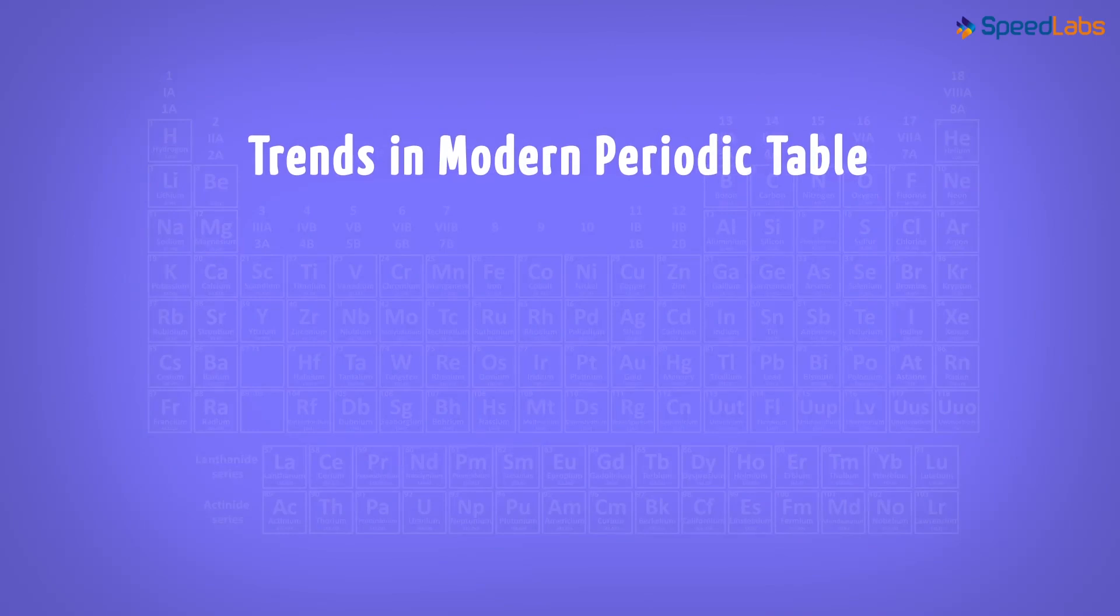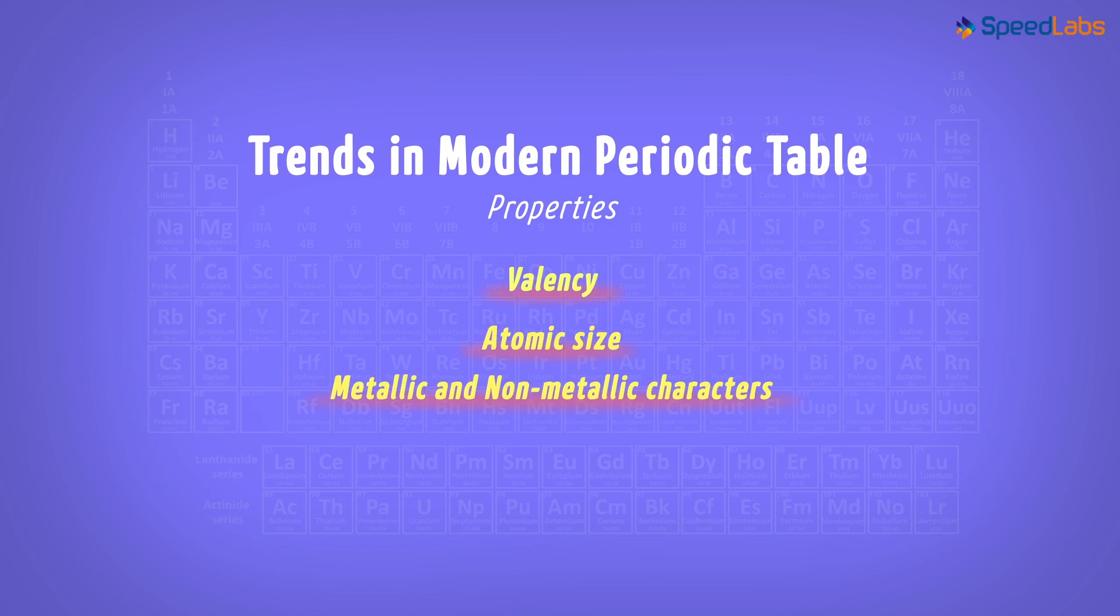Wait a second, what do we mean by trends in the table? Here trends refer to the properties. And what kind of properties are we talking about? We usually consider a few properties important for studying the elements. Some of these include valency, atomic size, metallic and non-metallic characters and so on. Let us discuss these properties in detail.